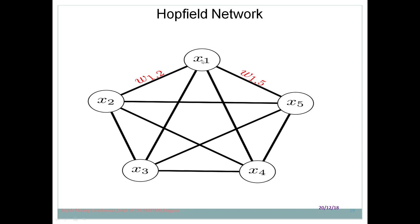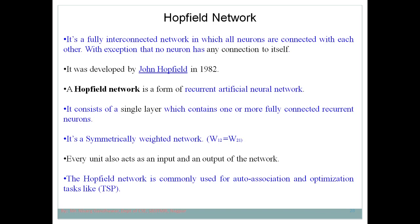Here you can see x1 is connected to x2, x5, x4, and x3. Similarly, x2 is connected with x1, x5, x4, and x3 — every neuron in the network is connected to every other neuron. This network was developed by John Hopfield in the year 1982. It consists of only a single layer, with n number of neurons, all connected with each other. The specialty is that no neuron has a connection to itself — a neuron provides its output as input to other neurons, but not back to itself.